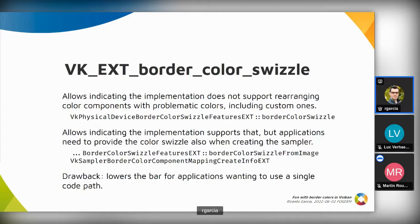Those samplers are no longer generic samplers — they can only be used with some image views. The drawback of this extension, apart from the obvious observation that it should have been part of the original custom border color extension, is that it somewhat raises the bar for applications that want to use a single code path for every vendor. Because if Border Color Swizzle is supported, it's always legal to pass the swizzle when creating the sampler — some implementations will need it and the rest can ignore it. So using a unified code path effectively forces applications to always pass this extra structure when creating the sampler.